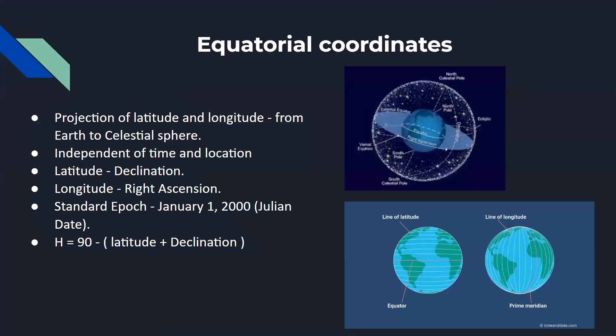So in order to know about the equatorial coordinate system, we have to know what a celestial sphere is. You know what scientists will do? If they don't know about any concepts, they will just imagine something. And with that as reference, they will move further with their research.